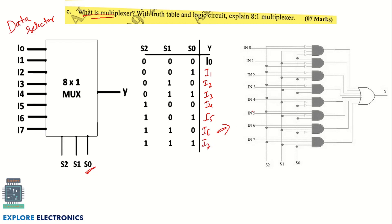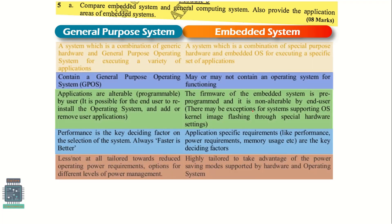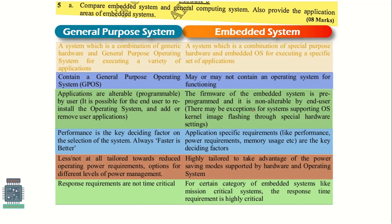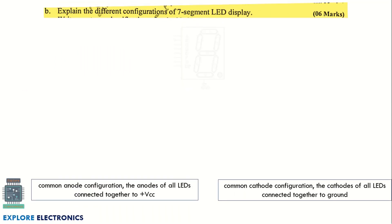The next question asks you to compare a general purpose system and an embedded system. There are six to seven comparisons to be made. Since this question carries eight marks, you need to write at least six to eight differences.